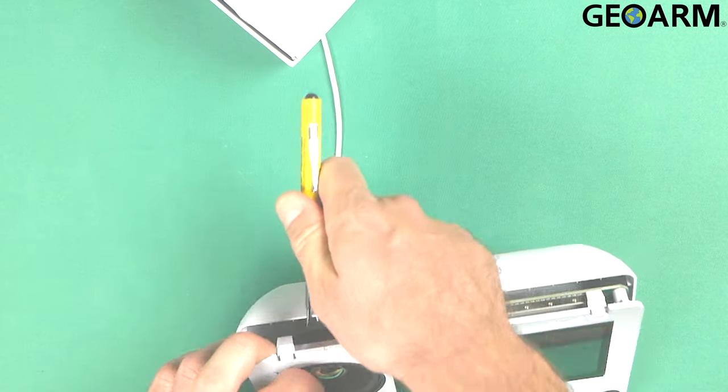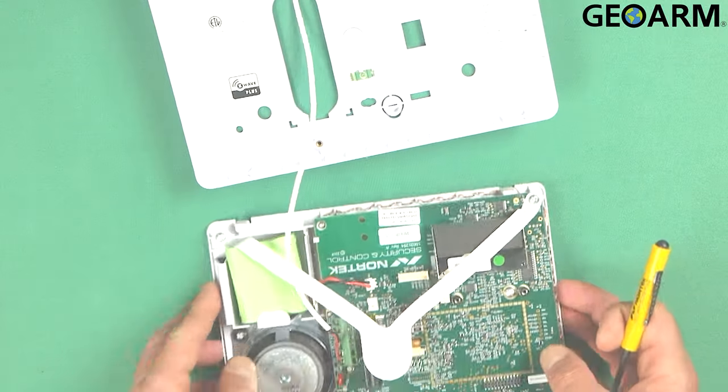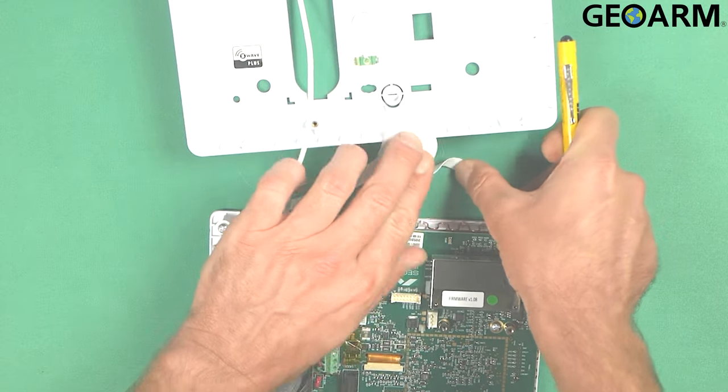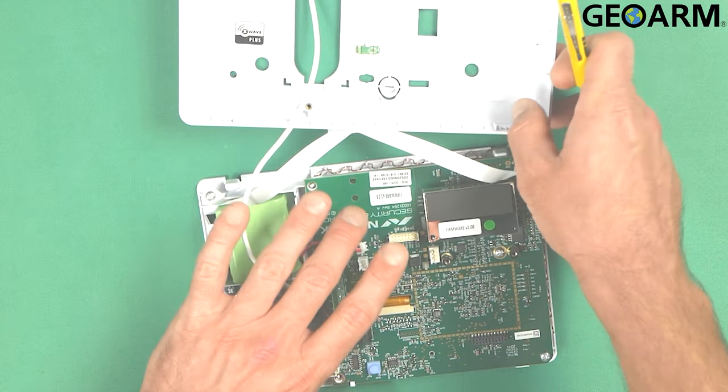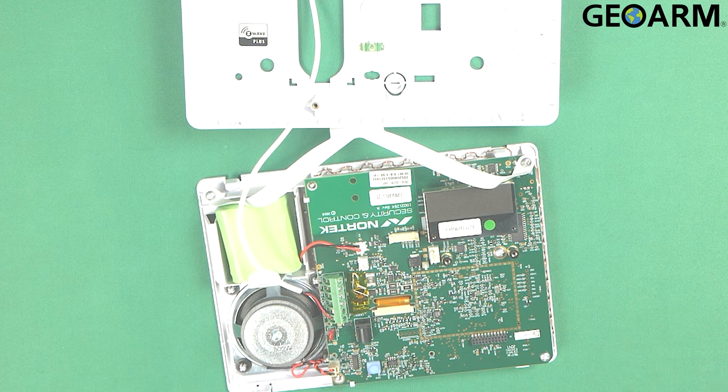Once it's open, then we should be able to go ahead and get the cell communicator installed. So when you look inside of here, you'll see a few different things going on. See a lot of different slots, you see my wiring, everything's in here the way it should be.